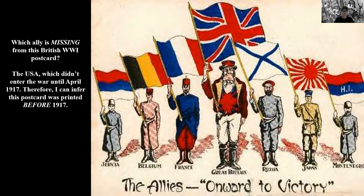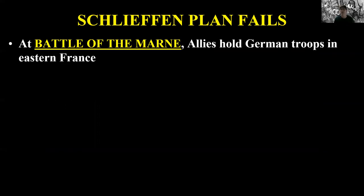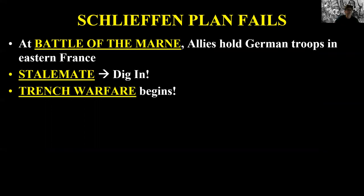Pause this video lecture now, open up the full lecture PowerPoint, and click on the link. The battle plan is called the Schlieffen Plan. The objective is to hold the Russians from advancing while concentrating on taking Paris — this is a war on two fronts. Hitler will attempt the same thing in World War II. In World War I, the Schlieffen Plan will not be successful. In World War II, it will be done differently by Adolf Hitler and it will be successful.